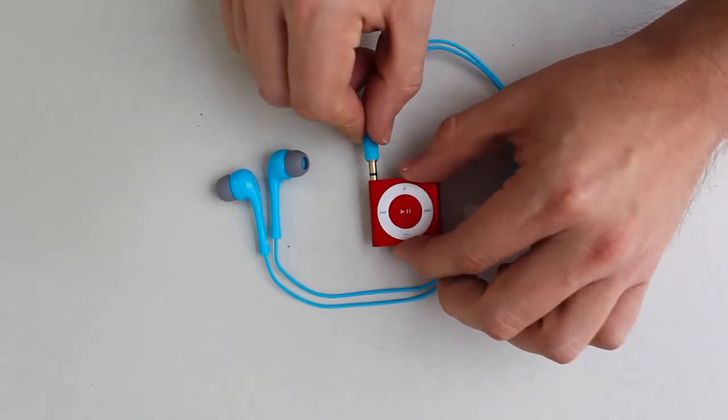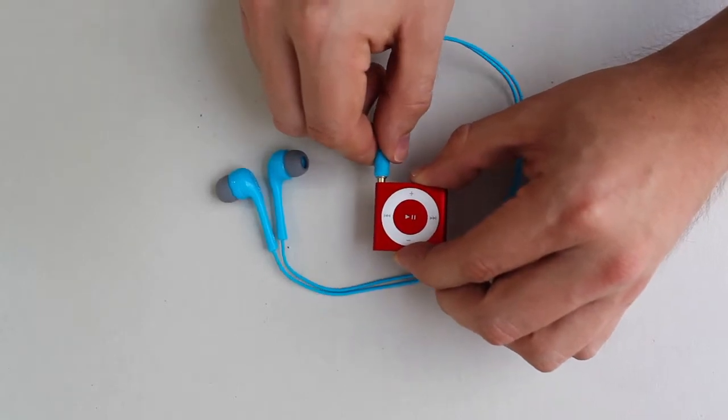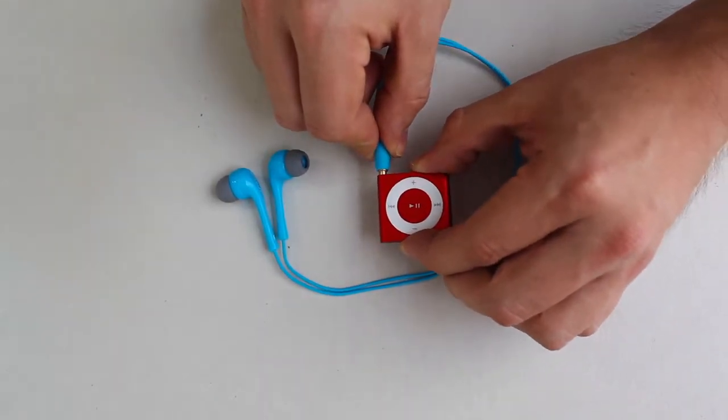The first thing is to make sure your headphones are plugged all the way into your iPod. If they're plugged part way in, sound will only come out of one earbud, so make sure they're plugged all the way.